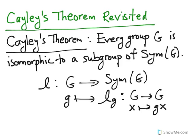What we have to show is that this map L is well-defined. In this case, that means that the output, L sub g, is actually an element of sym G. That means L_g should actually be a bijection.